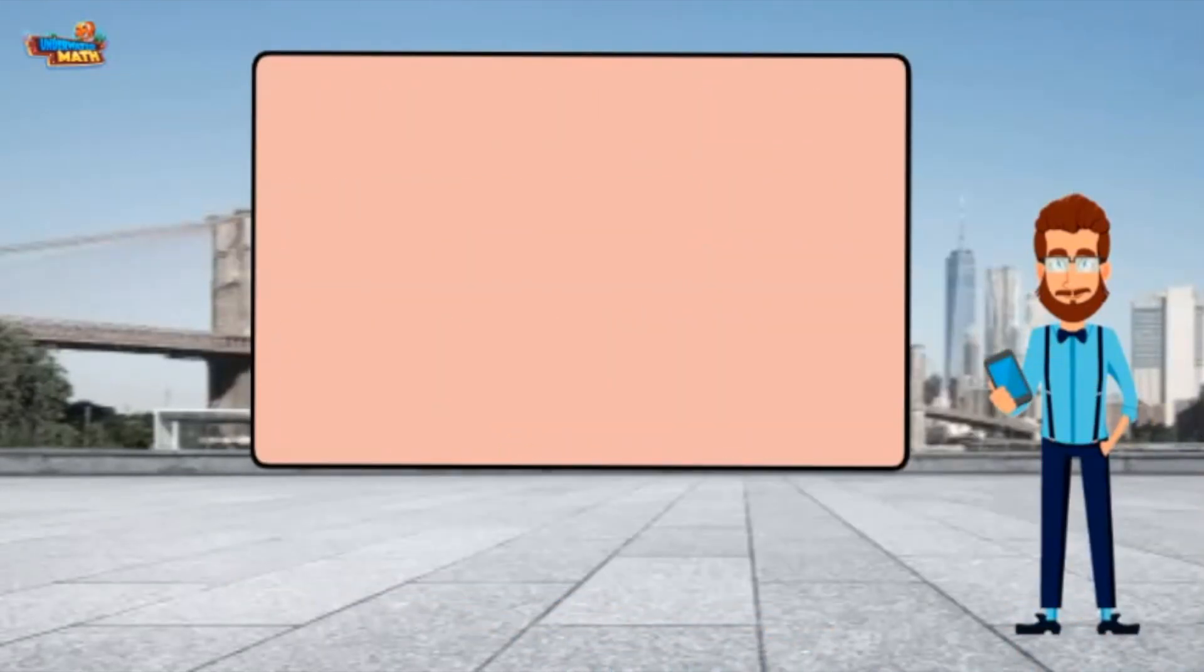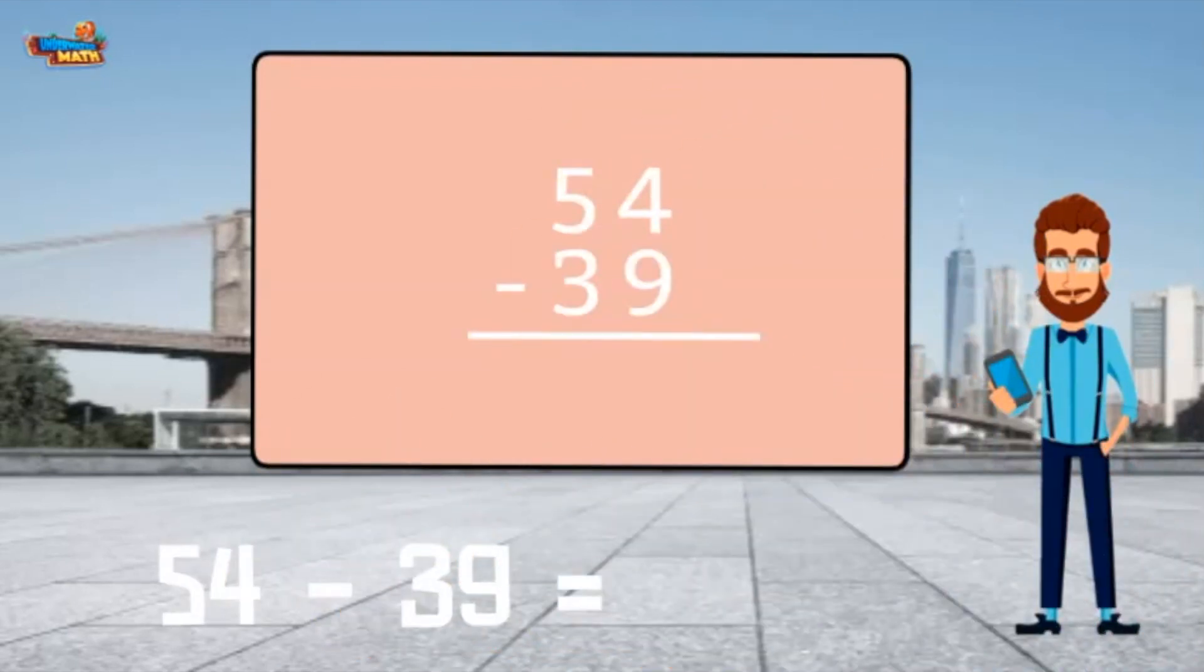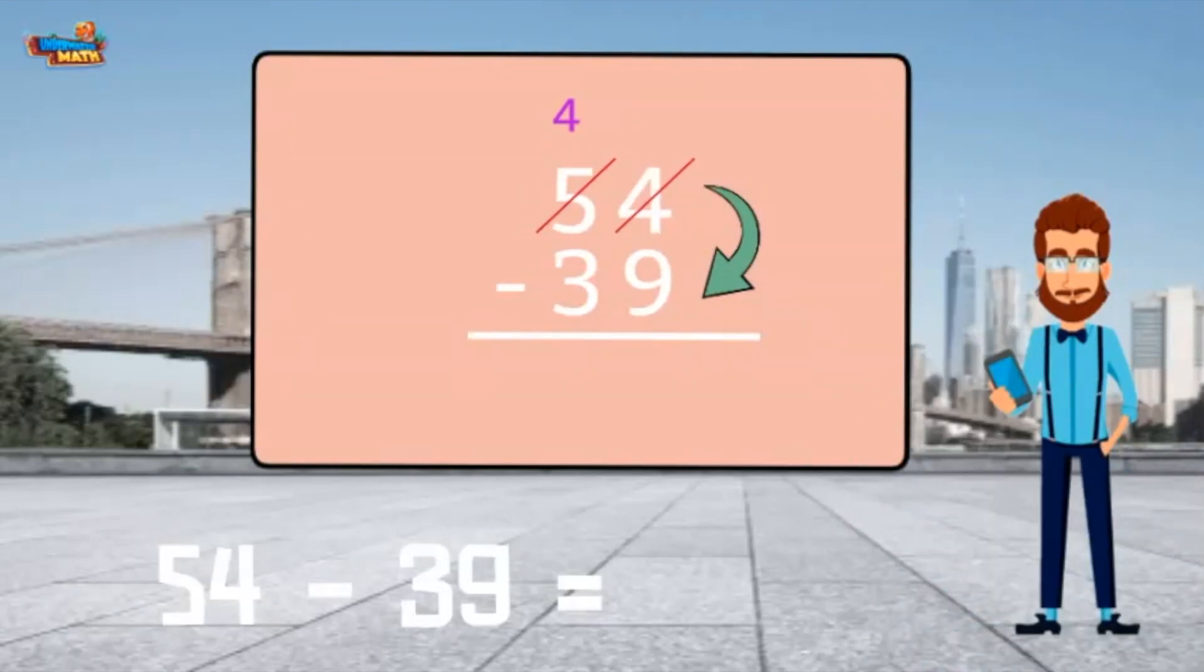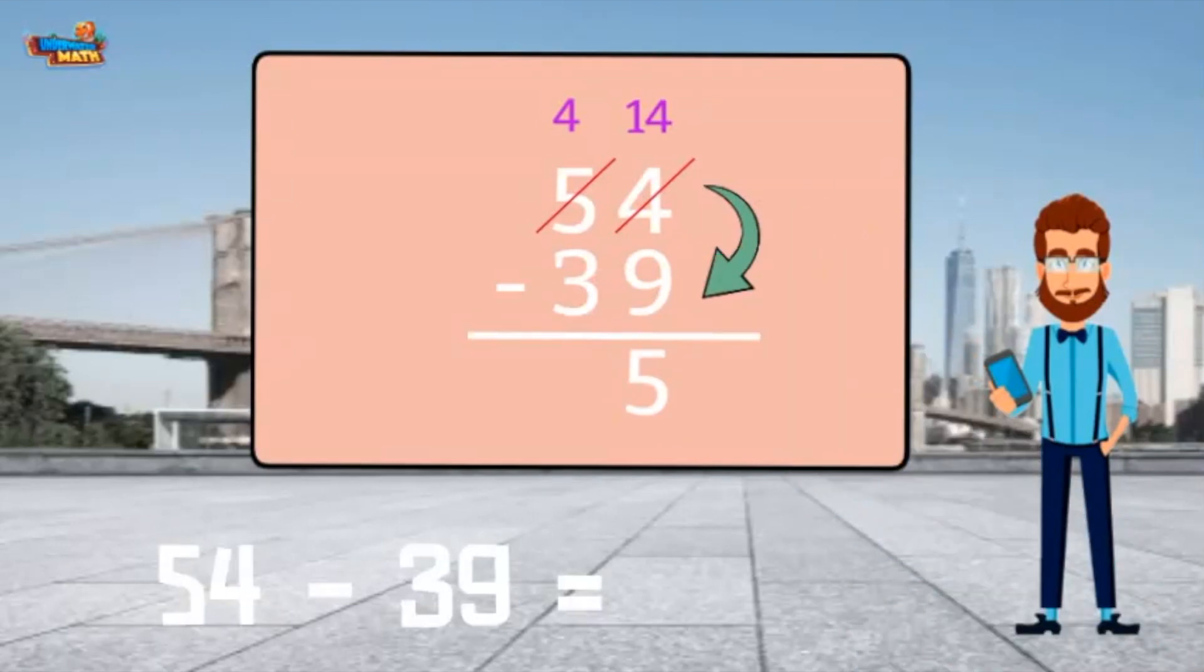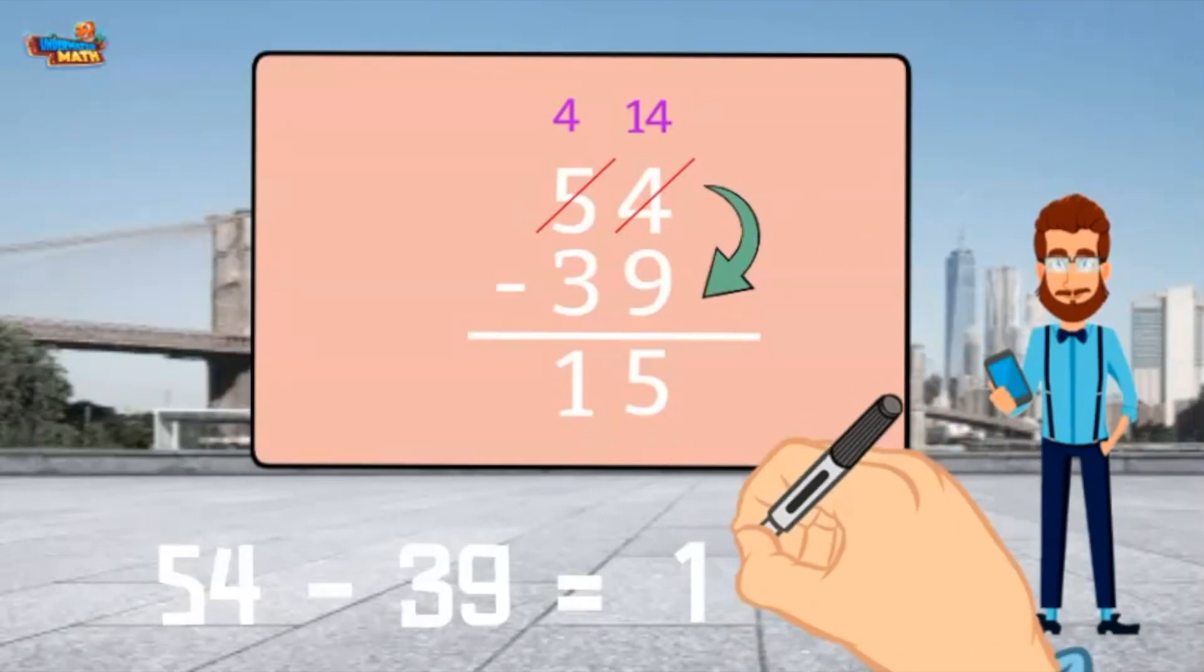Let's put it to practice and subtract 54 minus 39. Start in the ones. 9 is larger than 4 so we have to go next door and get 10 more. Cross out the 5 and make it a 4. Cross out the 4 in the ones place and make it a 14. We added the group of 10 to the ones place to get 14. 14 minus 9 equals 5. 4 minus 3 equals 1. 54 minus 39 equals 15.